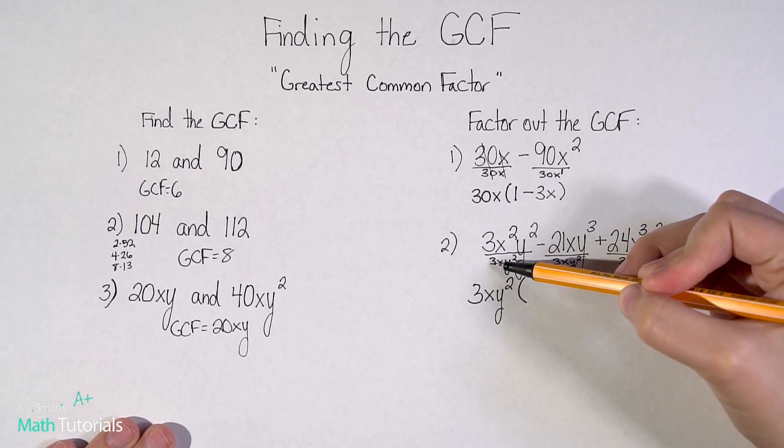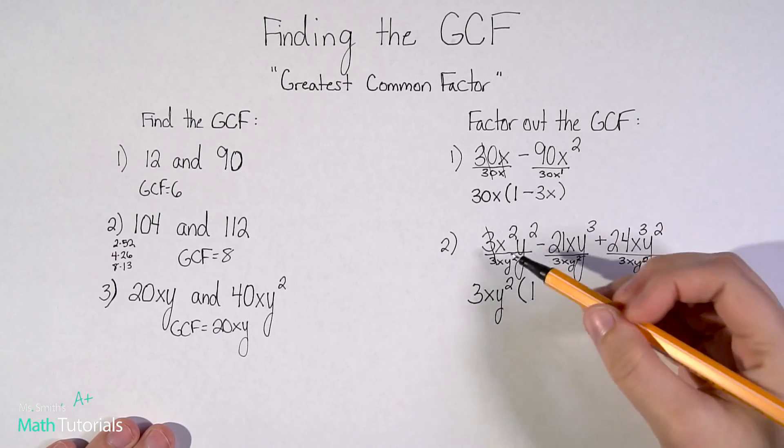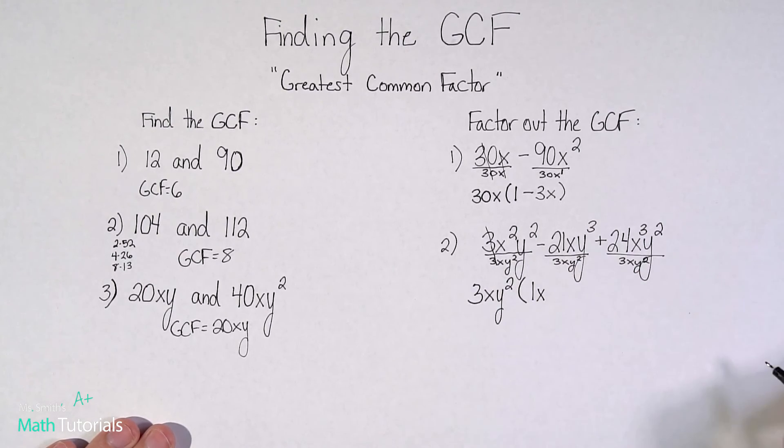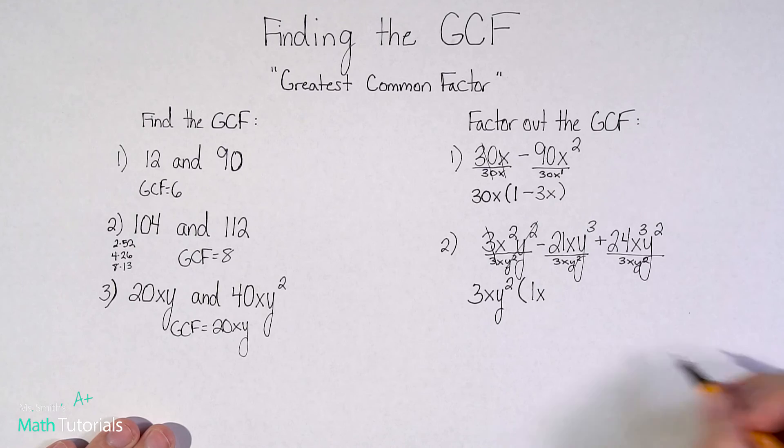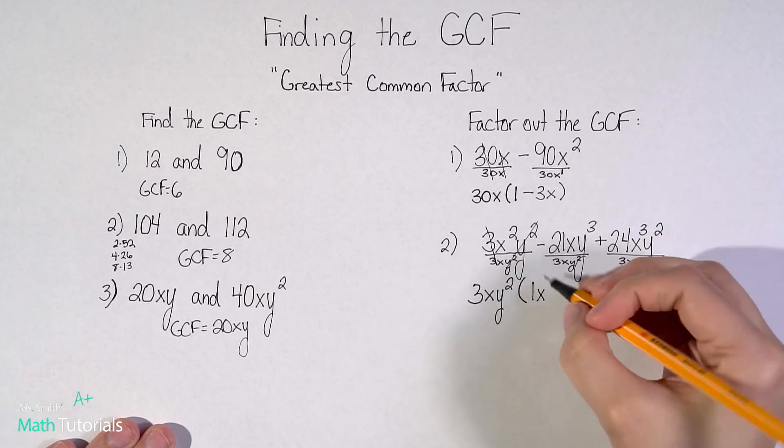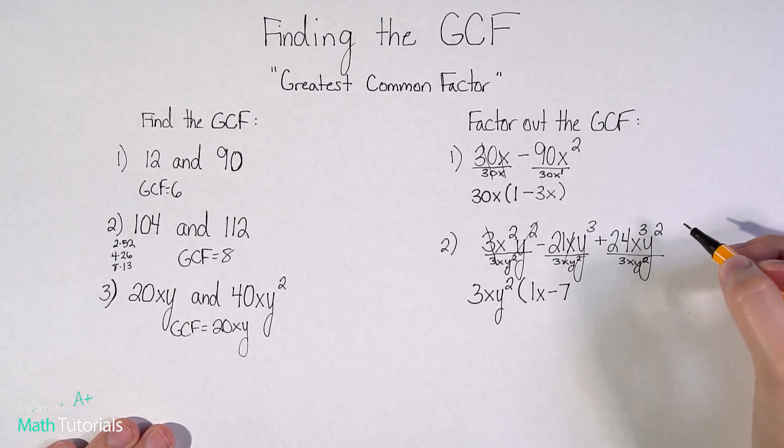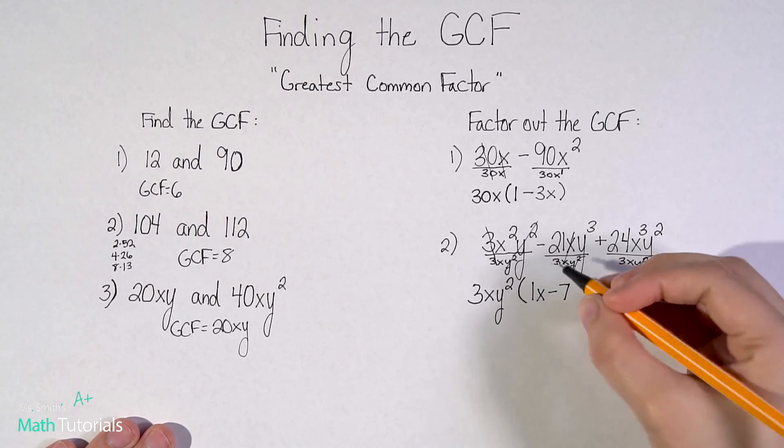All right. So three divided by three, that would just be one, right? So those would cancel to one. You can write one or not. Let's see x squared, and then we're pulling one x out. Two minus one would just be one x, right? And then we've got y squared divided by y squared. Well, those are the same. So they just cancel each other out. Let's keep going. So you could have one x or just x, whatever your preference is. Negative 21 divided by three. Well, that would be negative seven. x divided by x, those cancel to one. Y cubed divided by y squared. So you could either think of this as three minus two would be one or think, I had three y's. I'm taking two out. How many do I have left? Just one.